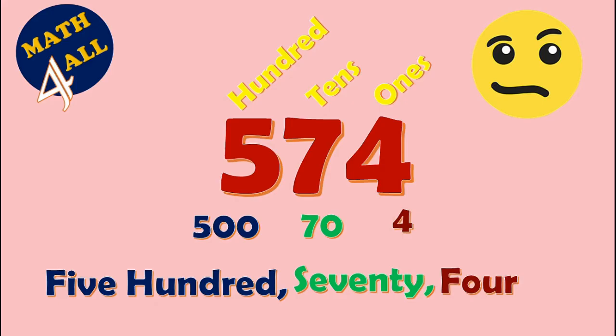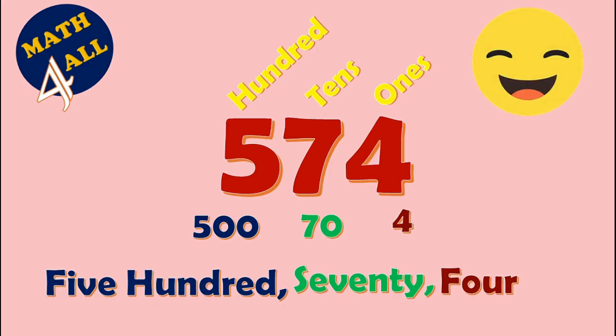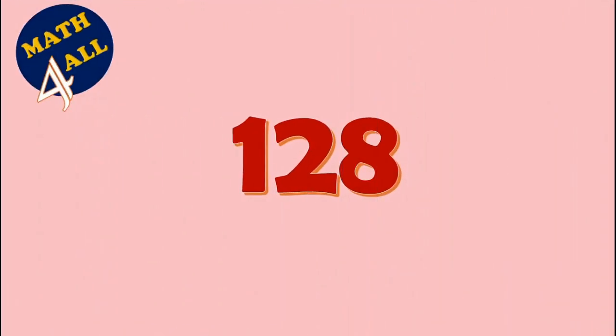Now let's read this number: five hundred seventy-four. Oh, I think it is very easy! Okay, then I guess you have to read this. We have to notice the place value and the value of each digit.